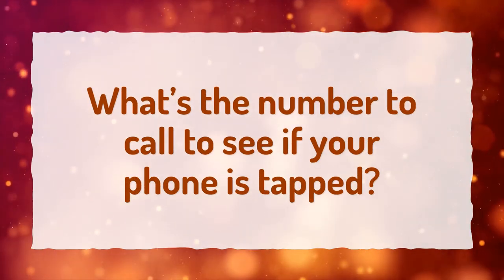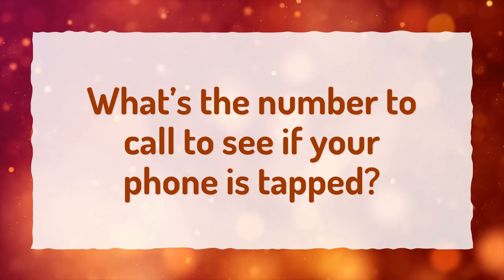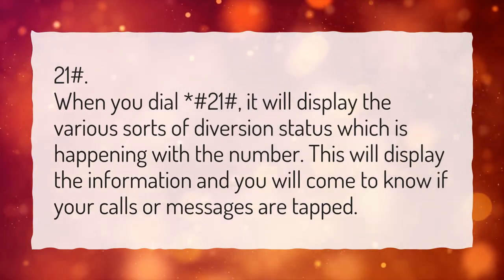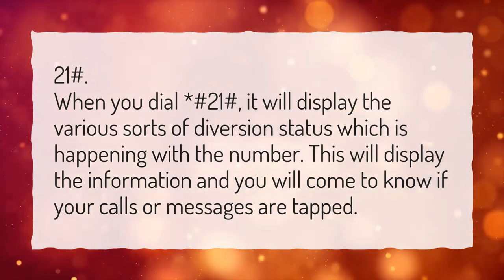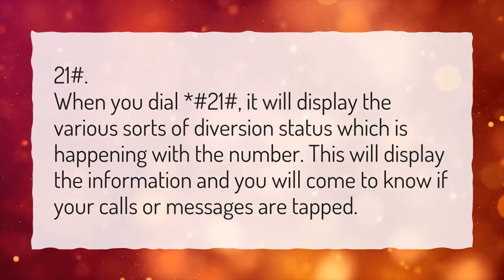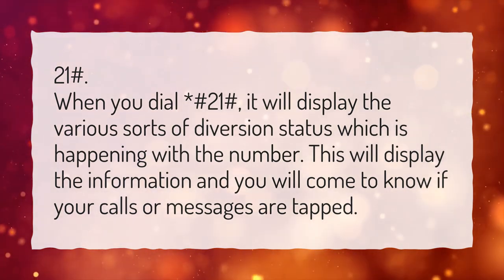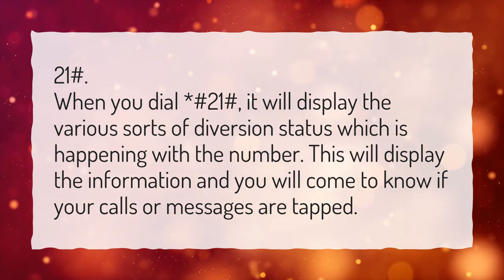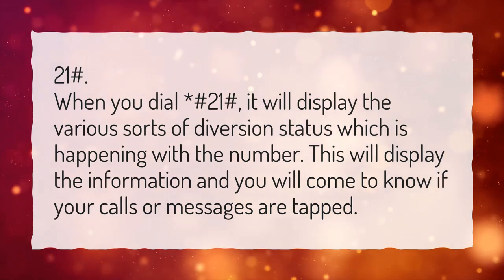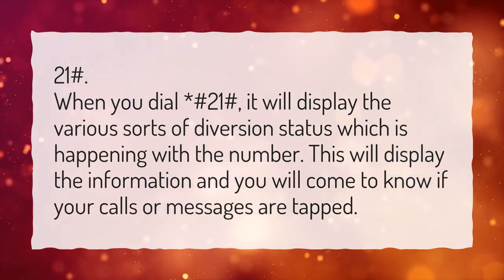What's the number to call to see if your phone is tapped? When you dial asterisk hash 21 hash, it will display the various sorts of diversion status happening with the number. This will display the information and you will know if your calls or messages are being tapped.